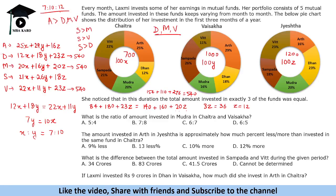We now know only the ratios 7 : 10 : 12, so we can answer questions based on percentages and ratios but not absolute amounts. Question 1: What is the ratio of amount invested in Mudra in Chaitra to Vaishak? Mudra in Chaitra = 20 × 7 = 140; Mudra in Vaishak = 16 × 10 = 160. The ratio is 140 : 160 = 7 : 8.